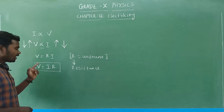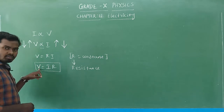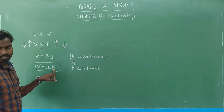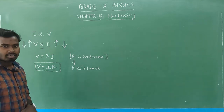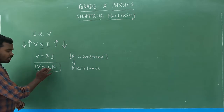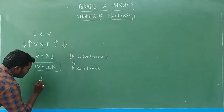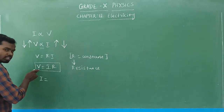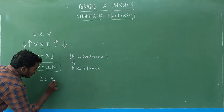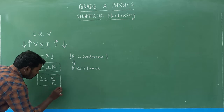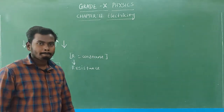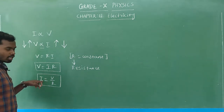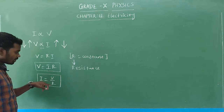There are three quantities in Ohm's Law: V is potential difference, I is the current flowing through the conductor, and R is resistance. If we need the current value, then I which is equal to V by R — current equals potential difference divided by resistance.